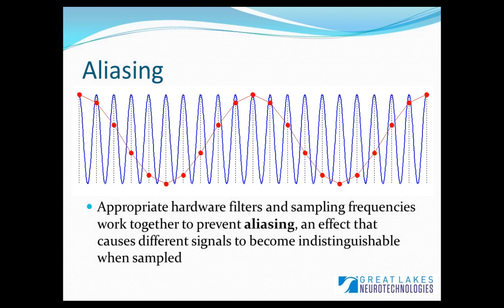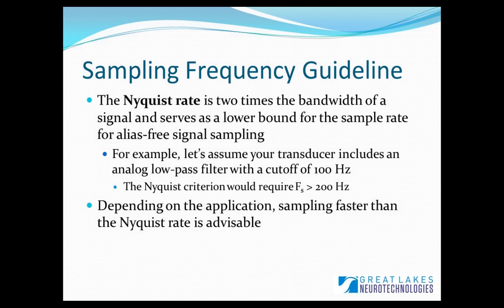Now that we've identified a significant problem with not sampling fast enough, how do we go about selecting the sampling rate? The Nyquist rate is two times the bandwidth of a signal and serves as a lower bound for the sample rate for alias-free signal sampling. For example, let's assume your transducer or data acquisition unit, such as the BioRadio, includes an analog low-pass filter with a cutoff of 100 Hz. The Nyquist criteria would require sampling at at least 200 Hz. Depending on the application, sampling faster than the Nyquist rate is advisable, but hardware and memory typically impose some practical limitations on how quickly you can sample.